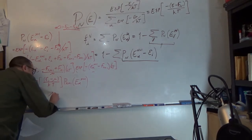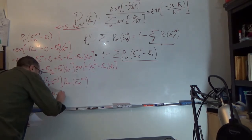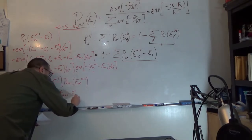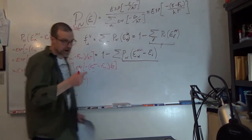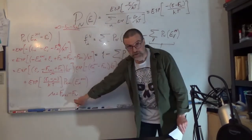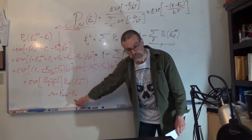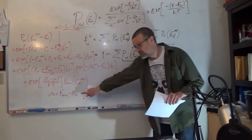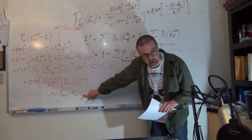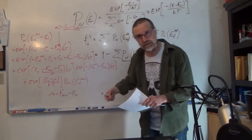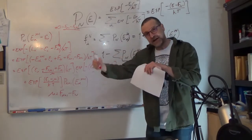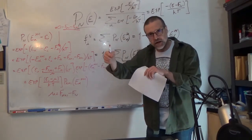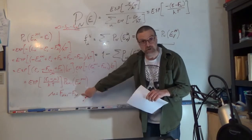The chemical potential μ equals F_{n+1} minus F_n — it is basically the energy to add one electron to the system, so it is the chemical potential for electrons. It turns out this is also the Fermi energy, because the highest occupied energy level means that when we add an electron, we have to place it just above that level.